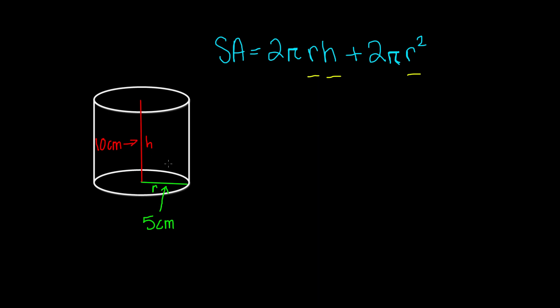So now that we know the height and the radius of this cylinder, we can plug them into our formula and solve. We have 2 times pi. Now the approximate number for pi is 3.14.